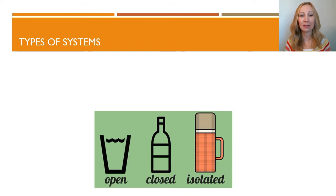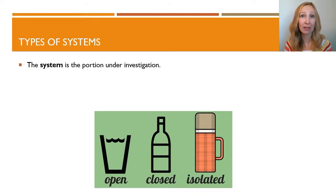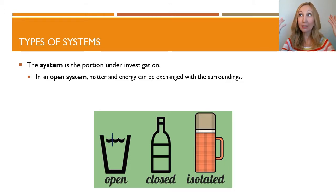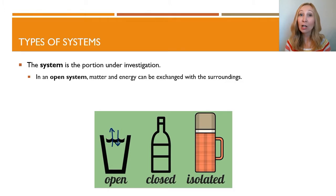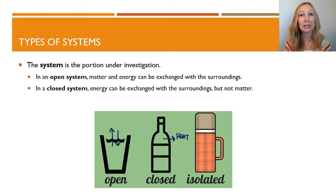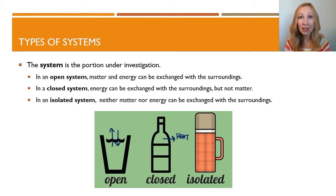There are three types of systems. In an open system, matter and energy can be exchanged with the surroundings. So if you're doing a chemical reaction that produces carbon dioxide and the carbon dioxide is just leaving the beaker, that is an open system. In a closed system, energy can be exchanged with the surroundings, but not matter — like a reaction taking place with the lid on, where the carbon dioxide has to stay in but heat could be transferred in and out. In an isolated system — kind of like a really good thermos — matter can't leave and energy cannot be exchanged with the surroundings. So if you put hot coffee into an isolated system, that coffee will stay hot because no energy has been released to the environment.